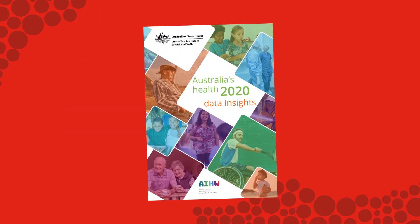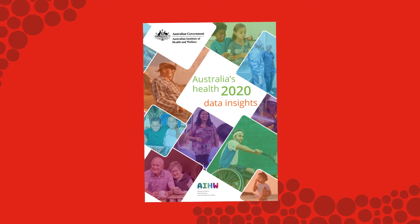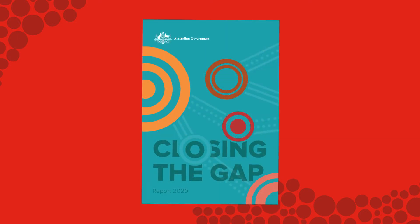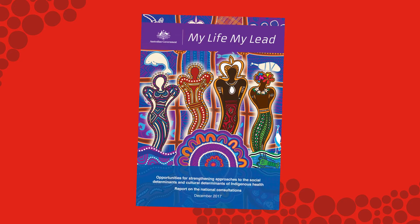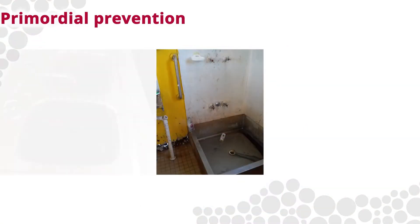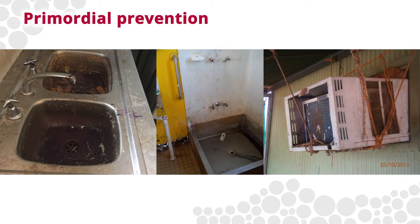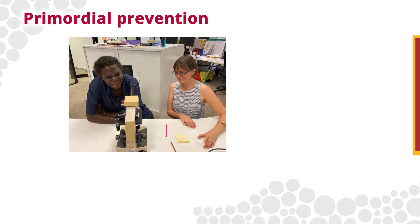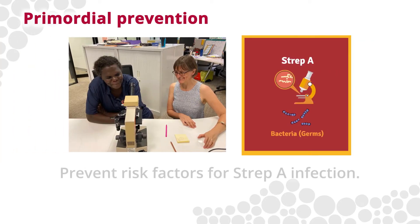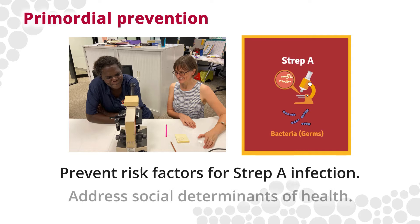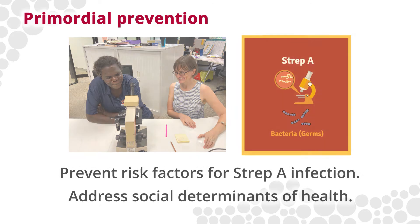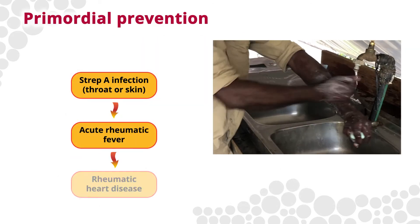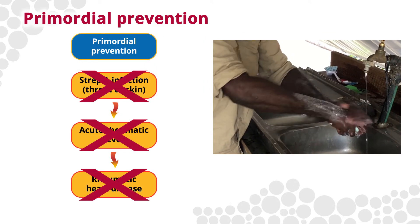The social determinants of health within an Australian Indigenous cultural context have profound impacts on health and wellbeing. The circumstances in which people live affect the risk of Strep A infections, ARF and RHD. Primordial prevention strategies are focused on the prevention of risk factors and generally address the social determinants of health that increase the risk of Strep A disease. The aim of primordial prevention is to stop Strep A infection.